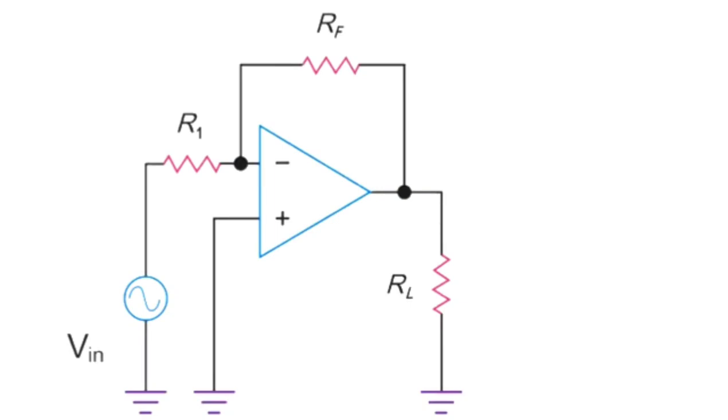the inverted circuit runs its signal through the negative input to produce an output signal that is inverted from the original input. The equation for calculating this process is negative RF divided by R1.